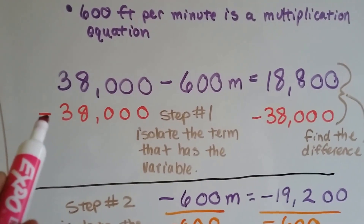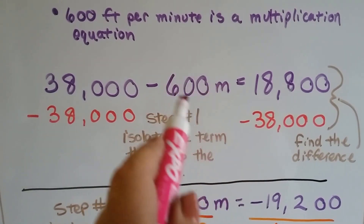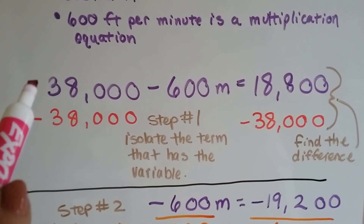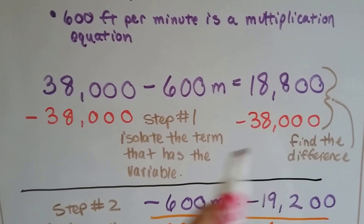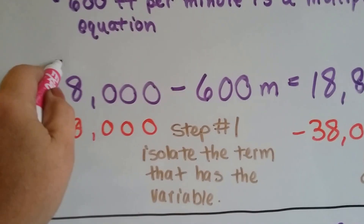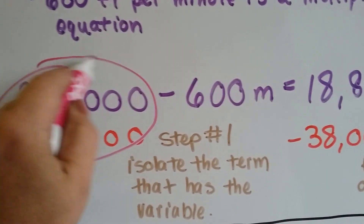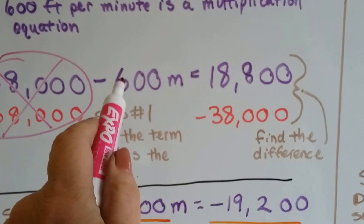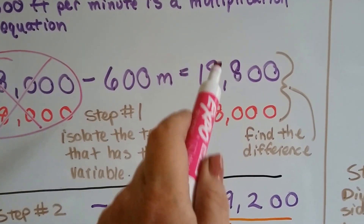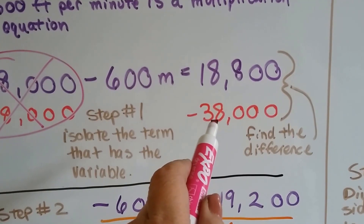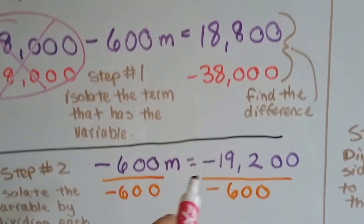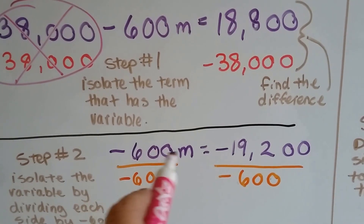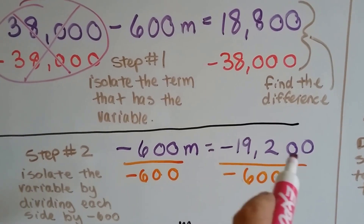First, we isolate the term with the variable. We subtract 38,000 from each side of the equal sign. 38,000 minus 38,000 makes zero, so that's gone. Now we have negative 600m, and we find the difference between 18,800 and 38,000, which is negative 19,200.